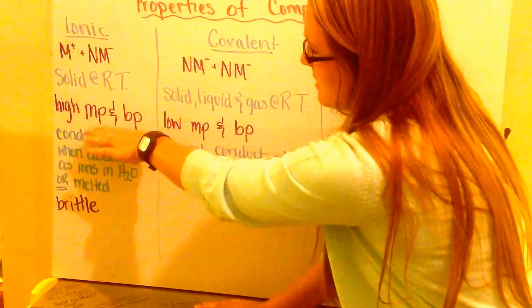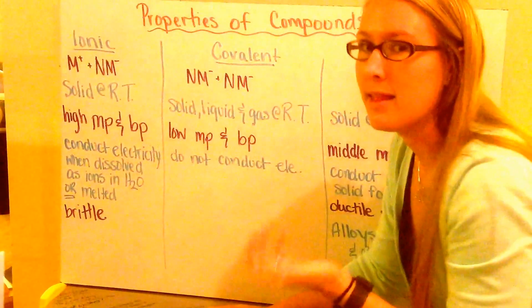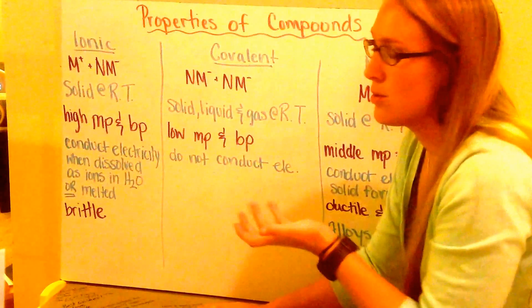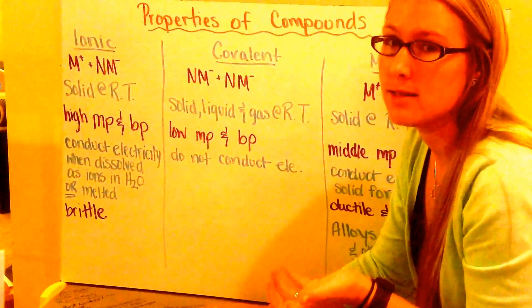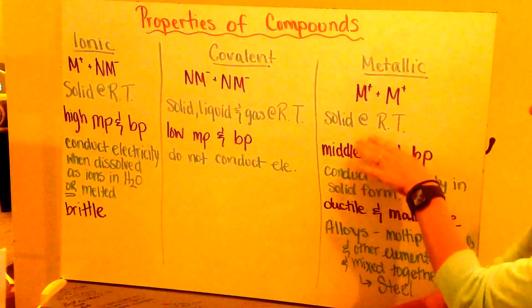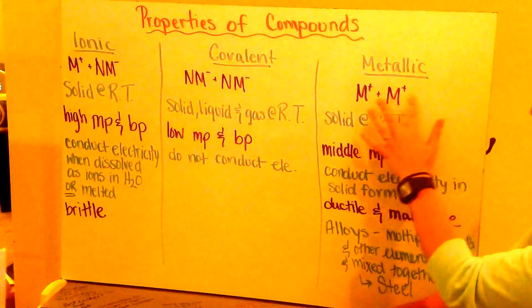Ionic compounds are going to have your highest melting point and boiling point. Think of salt. Salt, in order to become in the liquid form, would have to be extremely hot, much hotter than even a metallic compound, which are two metals.